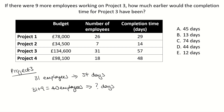So let's find out first how long it would take for one employee. If we had one employee, it would take the number of employees times the time it took — so 31 times 57 days — which gives us 1767 days. So that's for one employee.